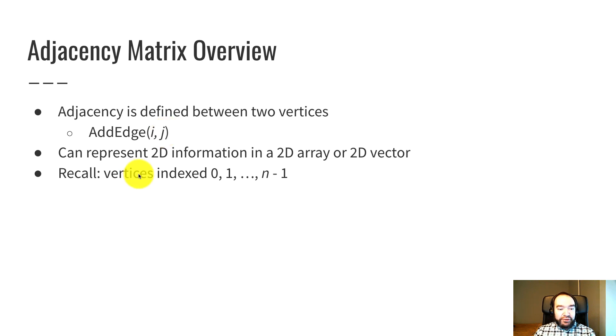Remember that we deliberately index the vertices 0 through n minus 1. Part of the reason for that is because now i and j will work very conveniently as array indices.